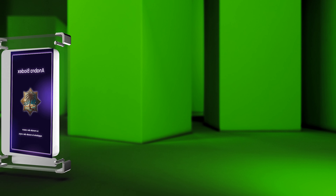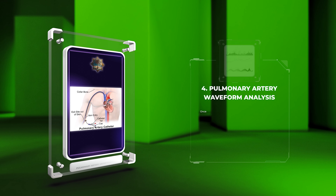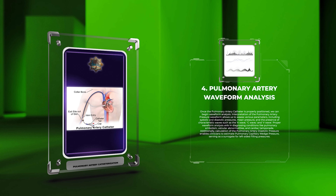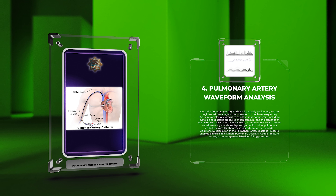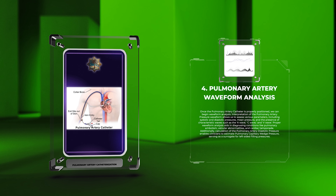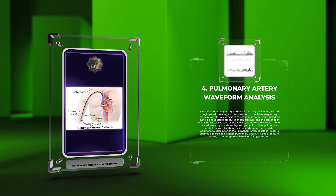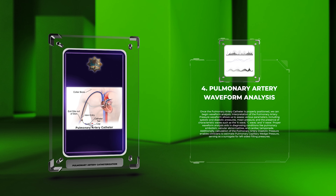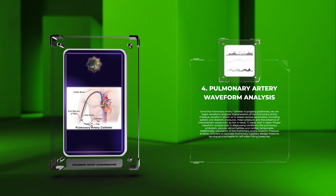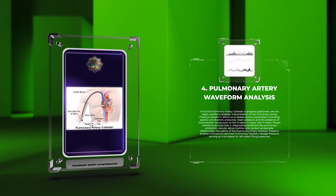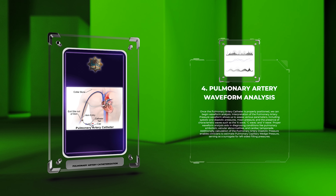Once the pulmonary artery catheter is properly positioned, we can begin waveform analysis. Interpretation of the pulmonary artery pressure waveform allows us to assess various parameters, including systolic and diastolic pressures, mean pressure, and the presence of characteristic waves such as the A wave, C wave, and V wave. Proper waveform analysis aids in diagnosing conditions like pulmonary embolism, valvular abnormalities, and cardiac tamponade.